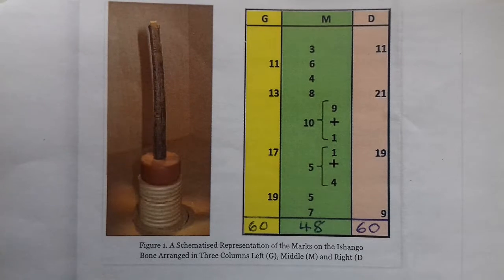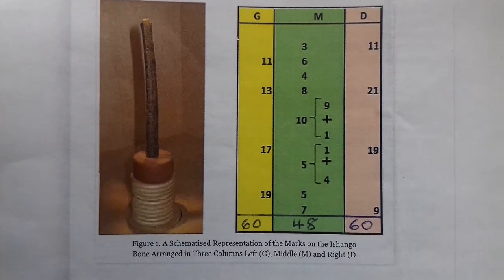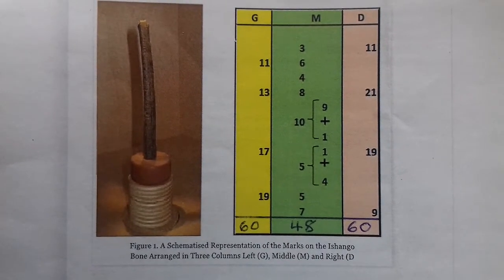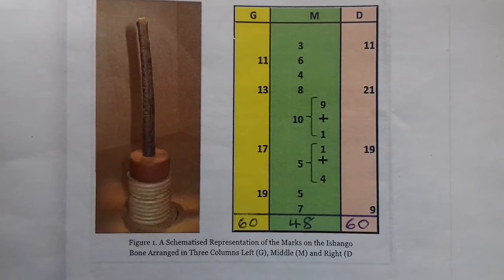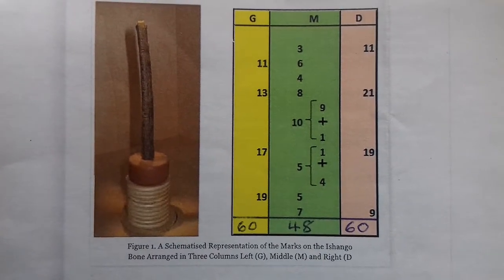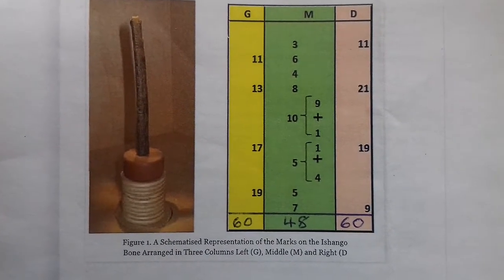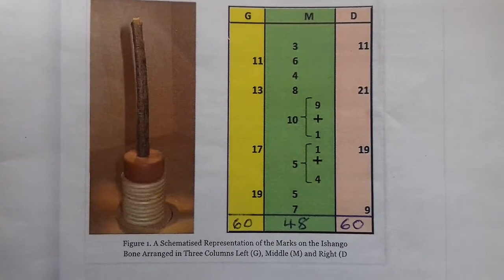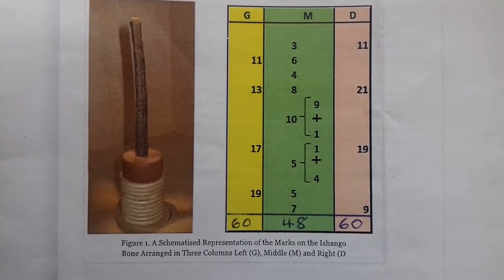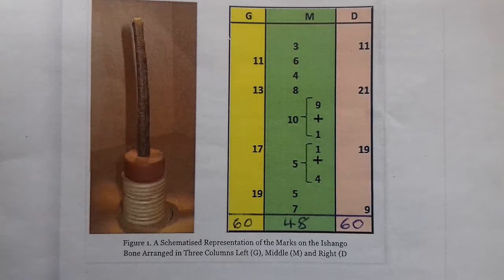We see at the bottom of column M and continuing into column G, the resulting prime numbers from this sieve, which are 5, 7, 11, 13, 17, and 19.